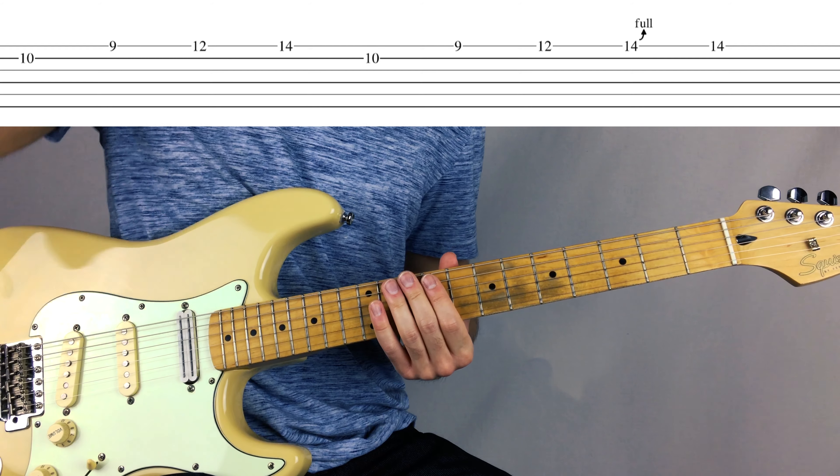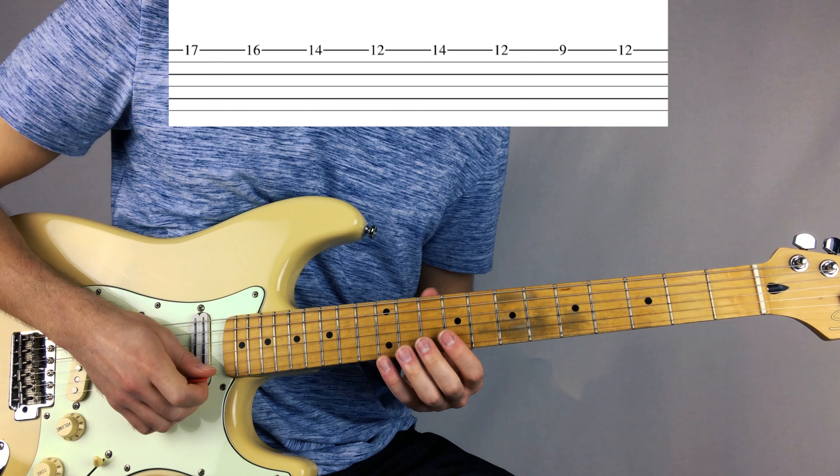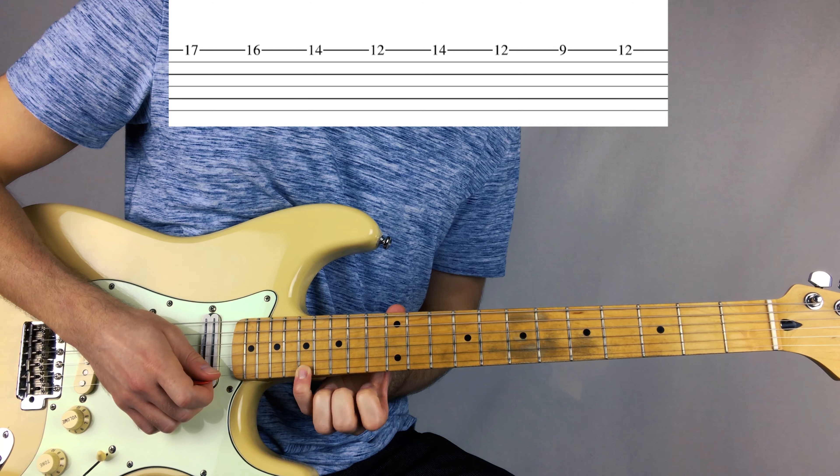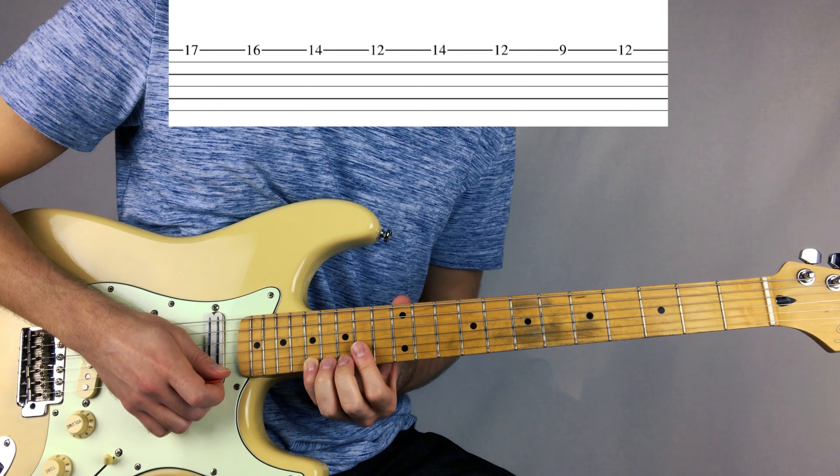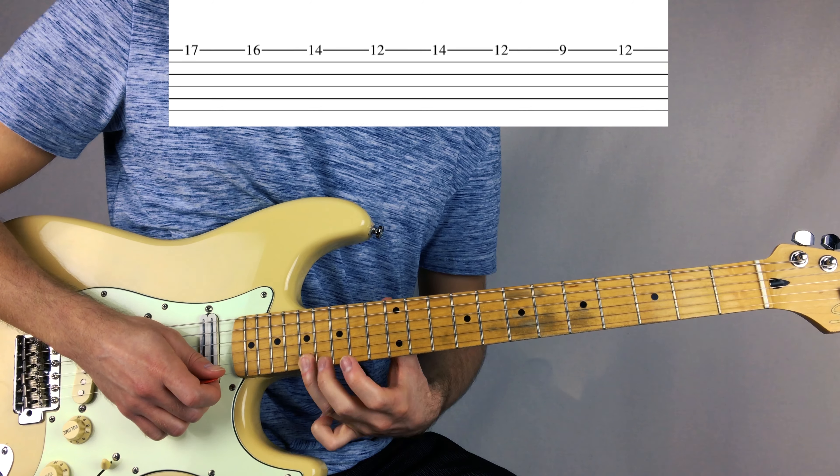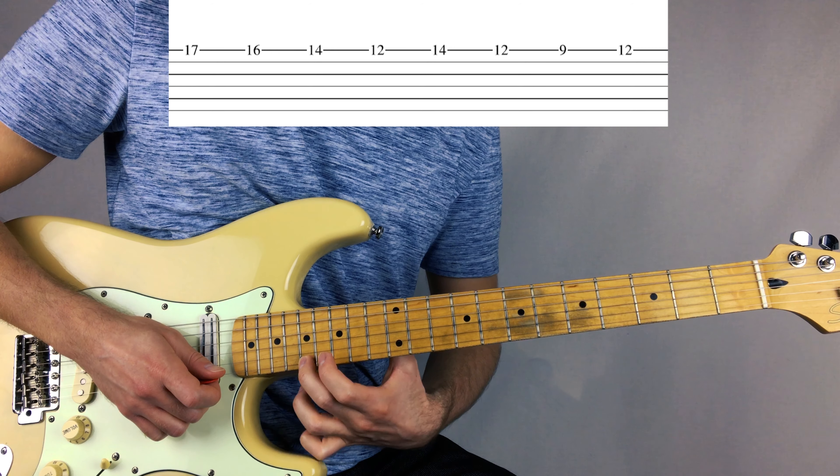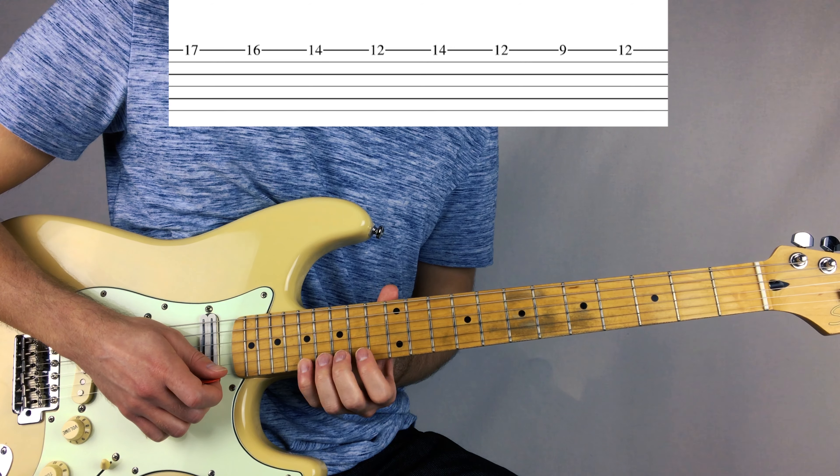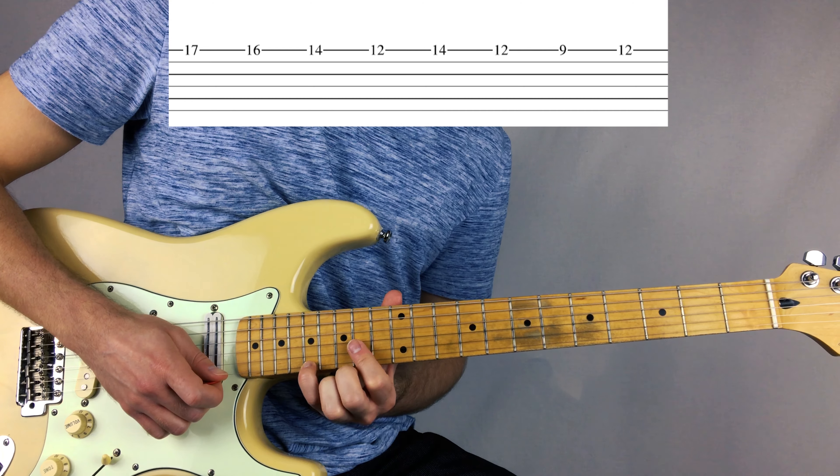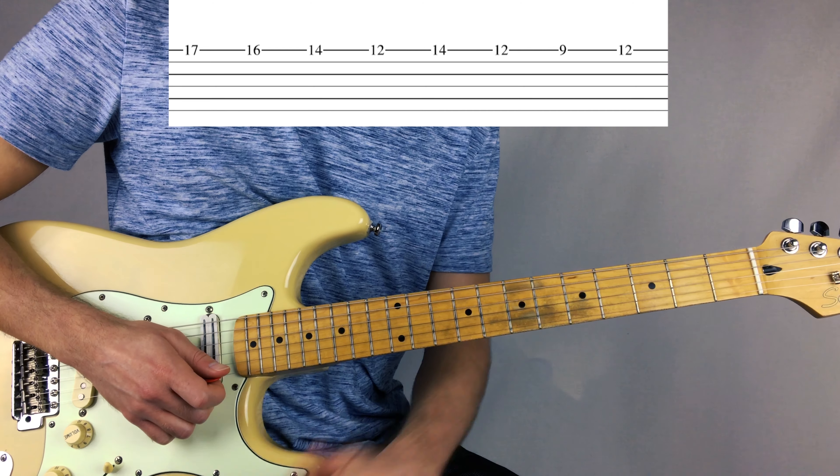So we're going to do another position shift right to the 17th. We're going to catch the 17 with our pinky. I like using my pinky. You don't have to. You can start with your third or second finger if you want. But I like giving myself options here, giving my pinky some exercise, as you already know.